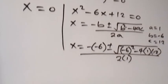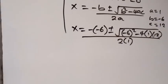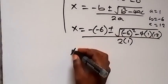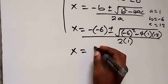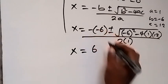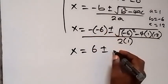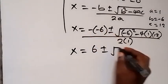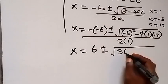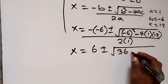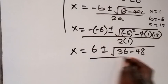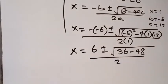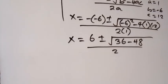When we simplify this further: minus times minus becomes plus, so we get x equals to 6 plus or minus square root of 36 minus 48, over 2. So 36 minus 48 is minus 12.